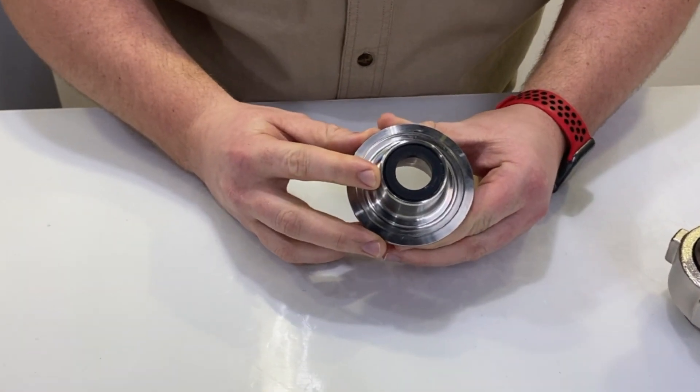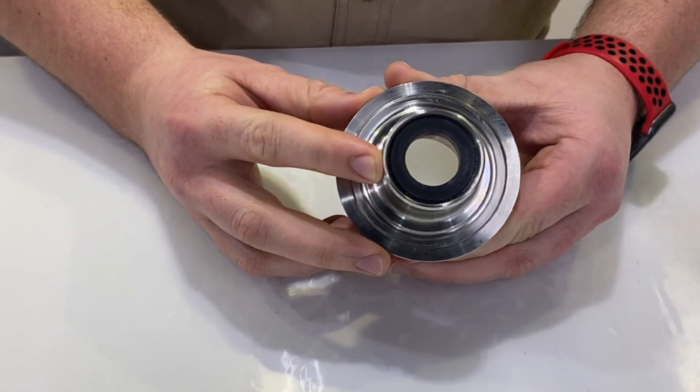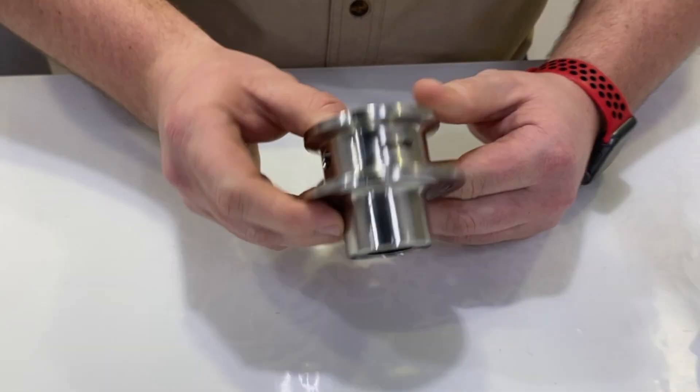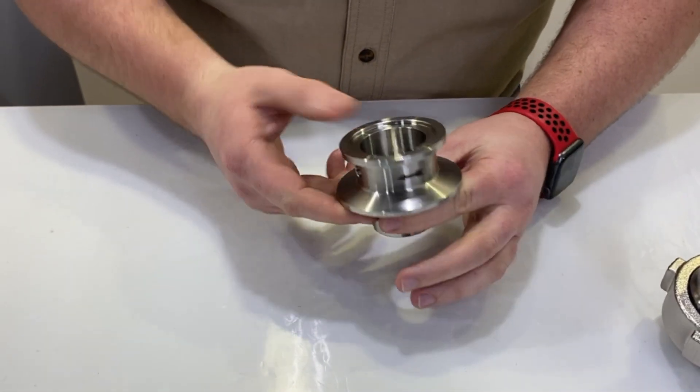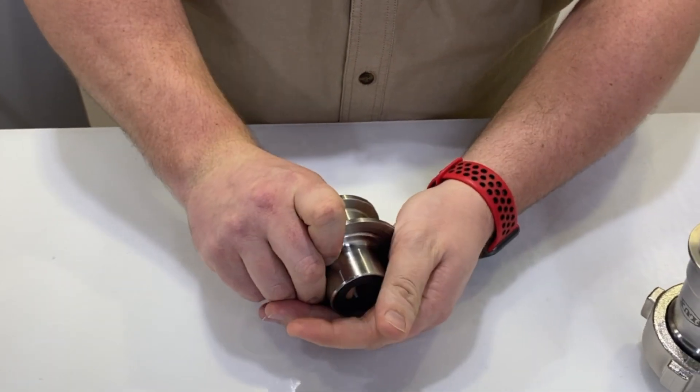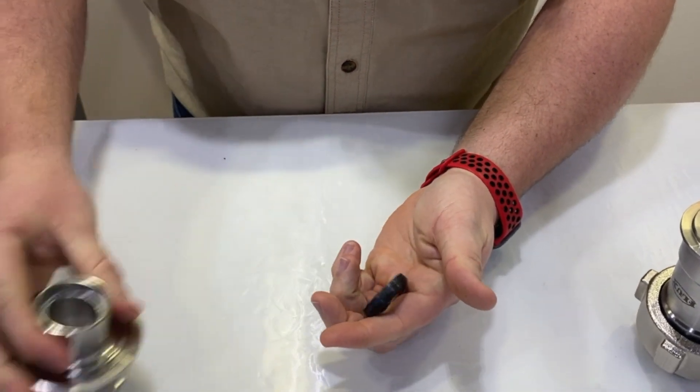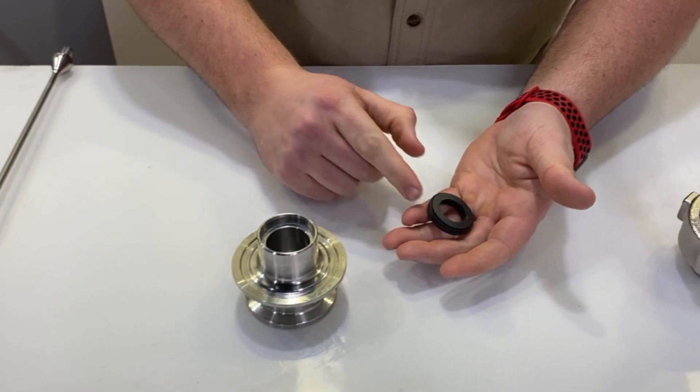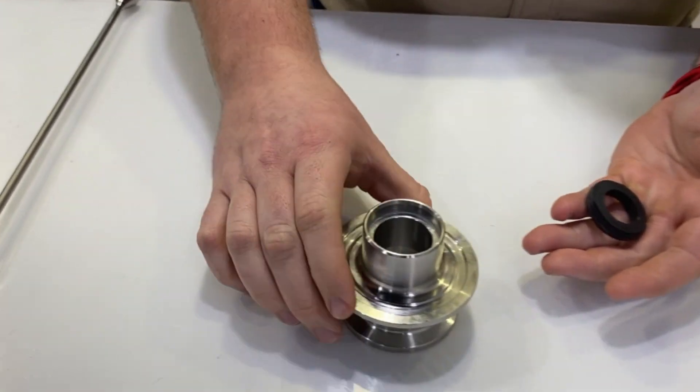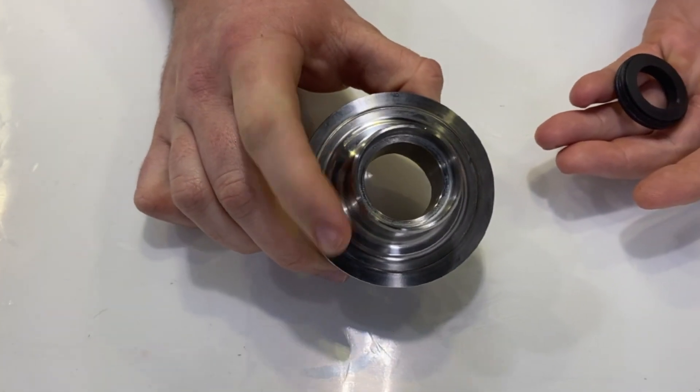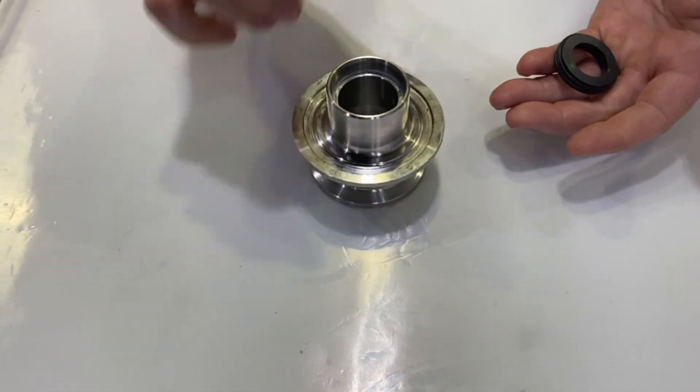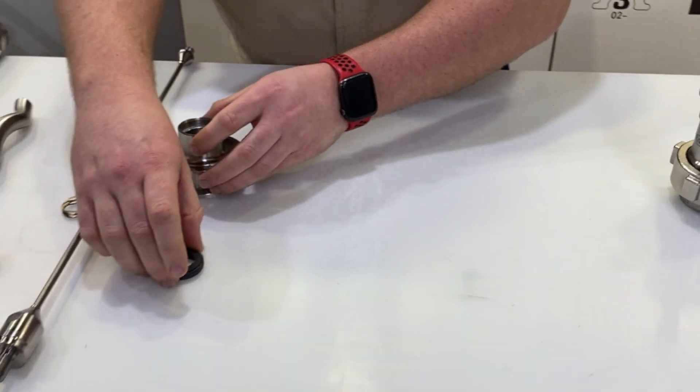Here you can see the stationary face of the mechanical seal. That will be removed by flipping the motor connection piece, inserting your thumb and pressing down. Just presses right out. Note that it is sitting in here on this shoulder. When reassembling you will just press it down and be sure that it sits flush.